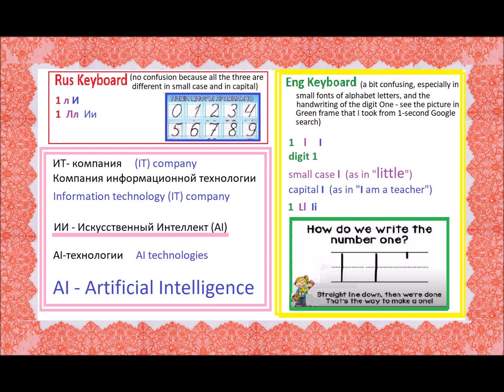We are going to do the double pink frame now — the vocabulary frame. Russian will be in black color and English will be in blue color. First term: IT company. In this line we see the Russian acronym, and this is also a Russian phrase — the company of information technology, or informational technology. IT company.